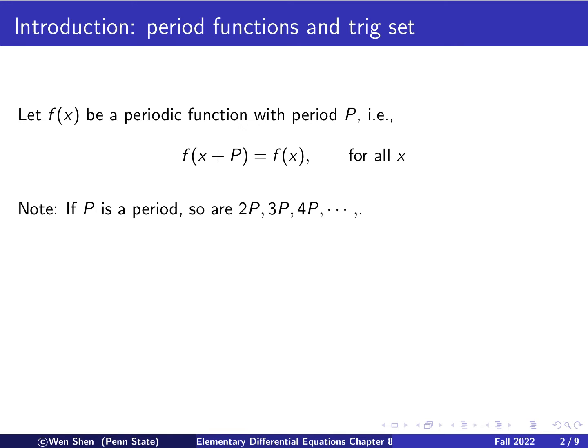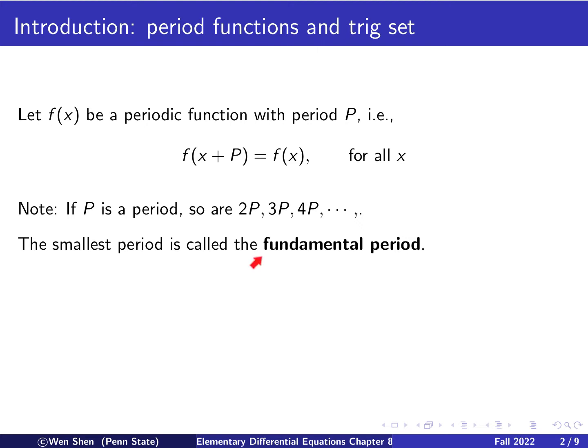Let's make an obvious observation. If P is a period, then any multiples of P — like 2P, 3P, 4P — will all be a period for the same function. So among all the possible periods of a function, there will be a smallest one, and that smallest one is called the fundamental period.